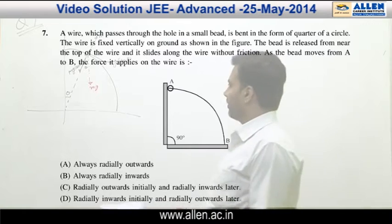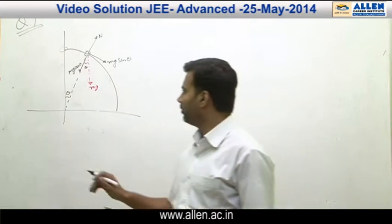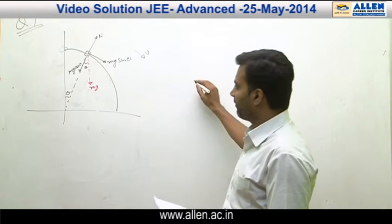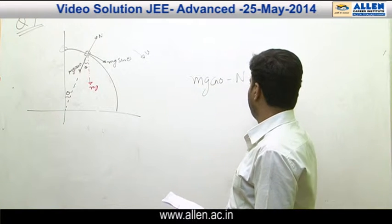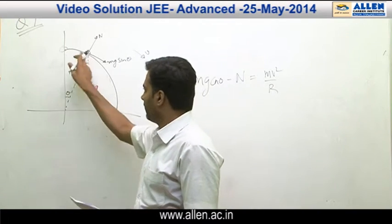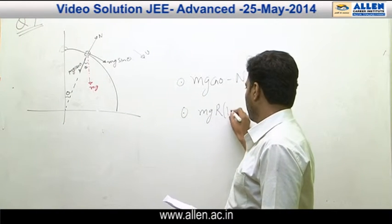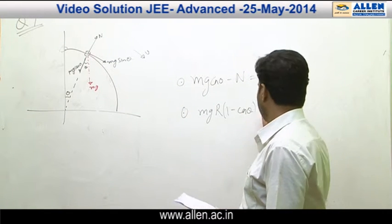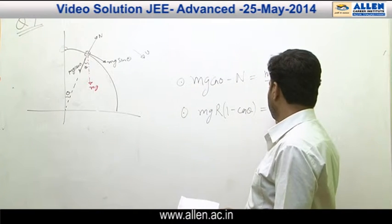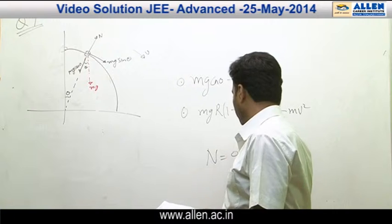As the bead slides down the ring, it acquires velocity starting from zero. Assuming at some angle theta it has speed v, the force equation gives mg·cosθ minus N equals mv²/r. Applying the work-energy theorem between the initial point and the given point, the work done by gravity is mgr(1 minus cosθ). Normal force does no work since it is perpendicular to displacement. Setting N equals zero gives a transition point.